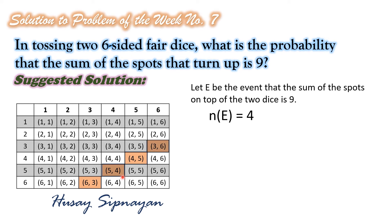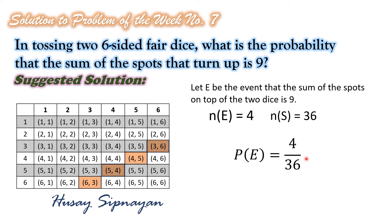Hence, the number of elements in the event E is equal to 4. And since there are 36 elements in the sample space, the probability of E is equal to 4 over 36, which can be simplified as 1 over 9.